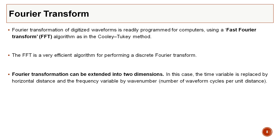To deal with Fourier transform of digitized waveforms, we use the Fast Fourier Transform (FFT) algorithm based on the Cooley-Tukey method, which is much faster. FFT is a very efficient algorithm for performing a discrete Fourier transform, and most computers use FFT. The Fourier transform can also be extended to two dimensions in time and space, covered in a previous lecture.